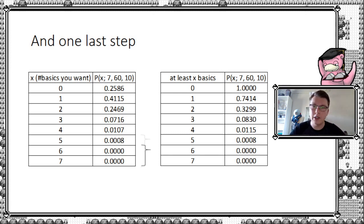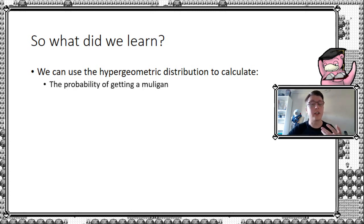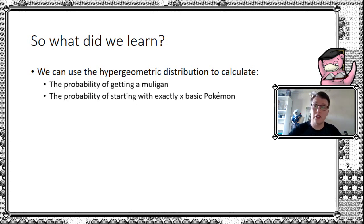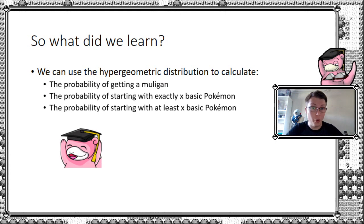And that is all we are going to cover for now with the hypergeometric distribution. So what did we learn? We learned how to use the hypergeometric distribution to calculate the probability of getting a mulligan, the probability of starting with exactly x number of basics, and the probability of starting with at least x basics. I hope you enjoyed this video — please let me know. Until the next episode, where I'll look at further applications of the hypergeometric distribution.